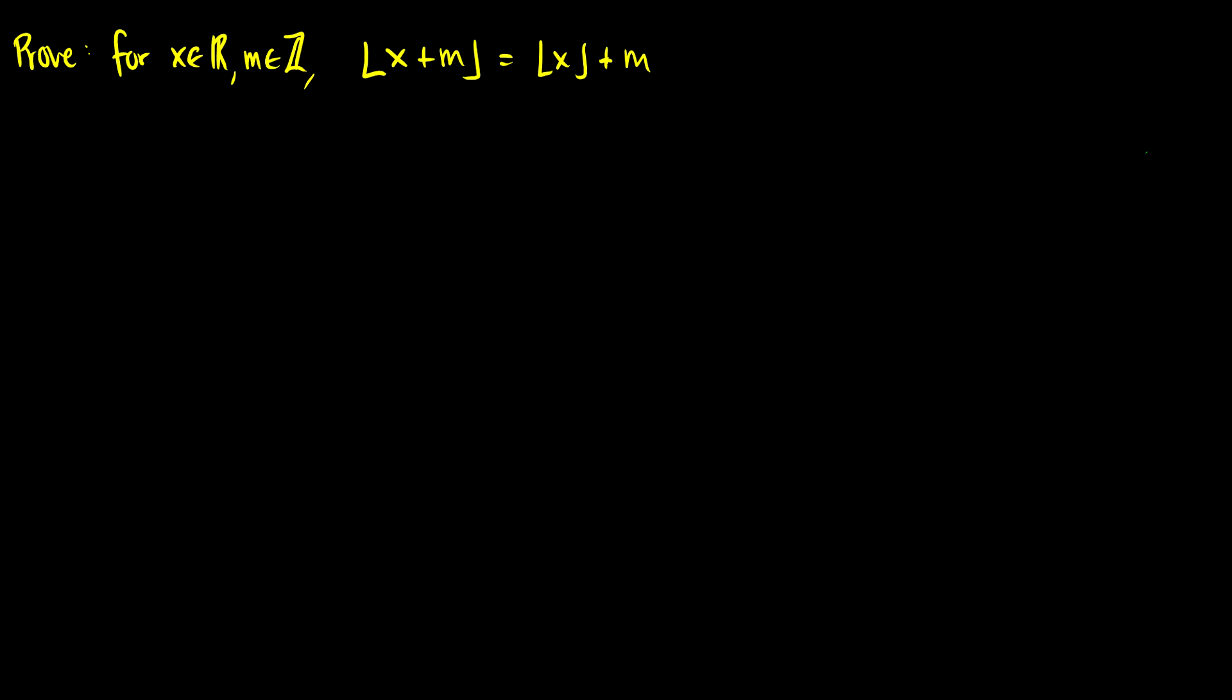So what's our definition? Well, if the floor of x is equal to n, then x is going to be greater or equal to n but strictly less than n plus 1. So we want to get the floor of x plus m. So we already have an x here, so let's just add m into this inequality here.